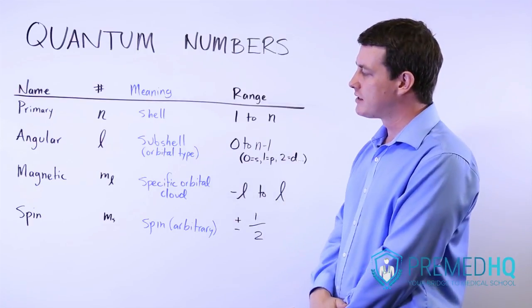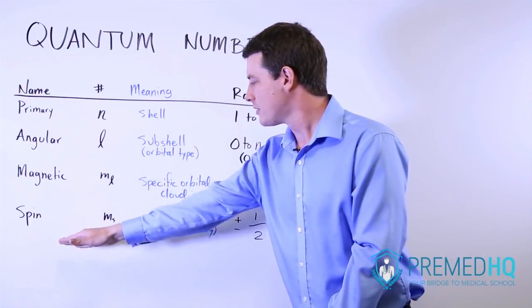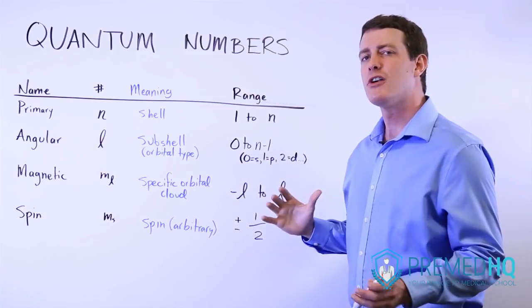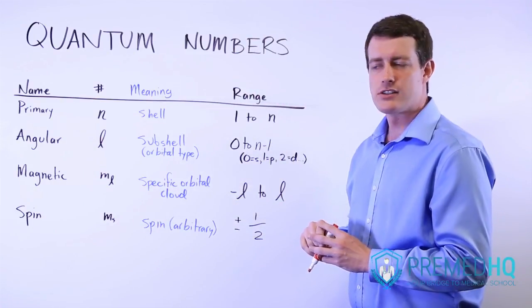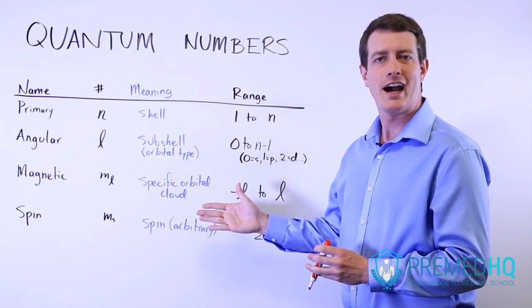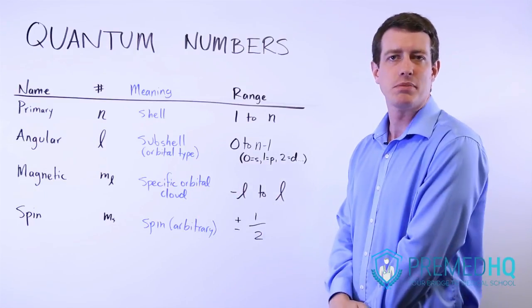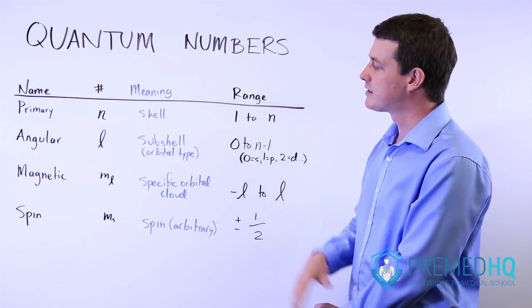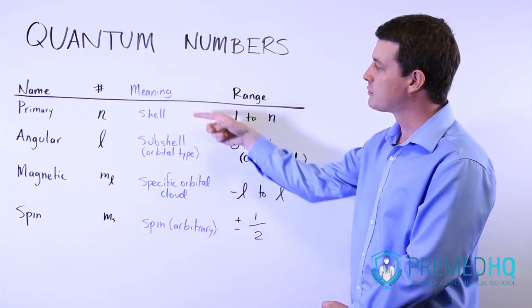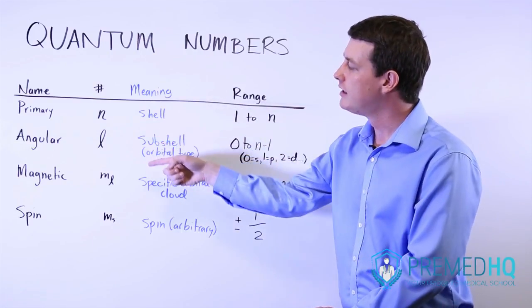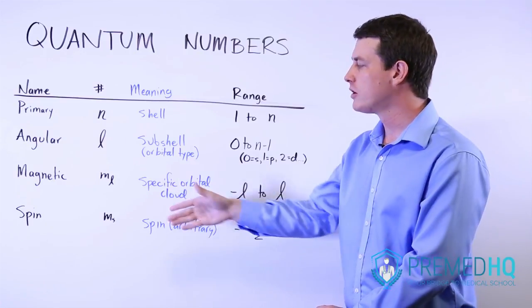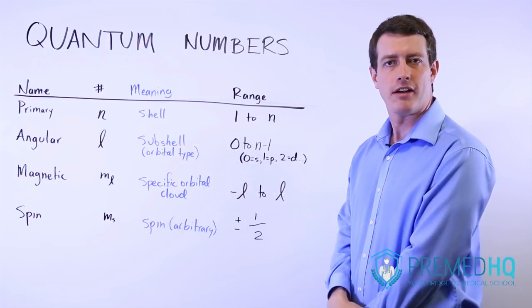What they established was simply a spin quantum number, the m sub s, which is an arbitrary number that we've decided on. It's going to either be a plus one half or a minus one half, and that's simply a way of distinguishing the two electrons. So within the same cloud, the two electrons will have the same n, l, and ml number. But one of them will be assigned plus one half, and the other will be assigned negative one half.